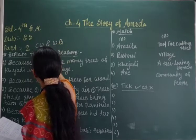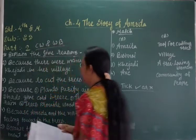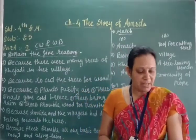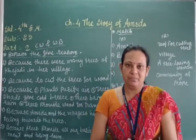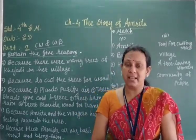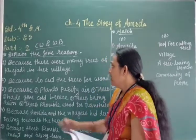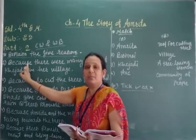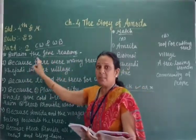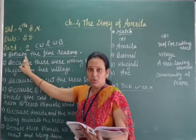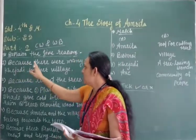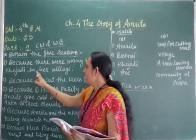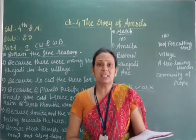This is the workbook. Okay, now first number: Why was Amrita's village named Kejri? When students we start writing give reason, we have to start with 'because' first. If you don't write 'because', then write 'due to'. Now first number — because there were many trees of Kejri in her village.